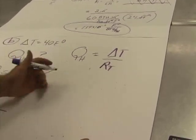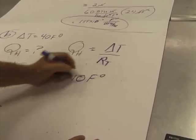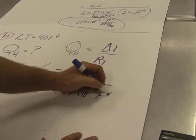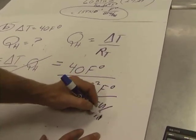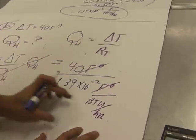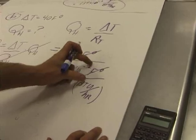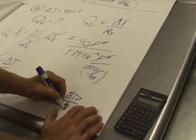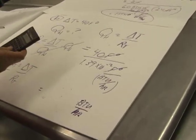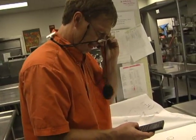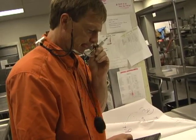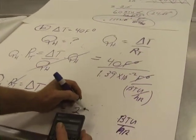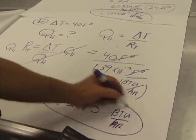I'll have one more time to make sure I get this right when I do the units. So I've got 40 Fahrenheit degrees over 1.39 times 10 to the minus 2 Fahrenheit degrees per BTU per hour. Fahrenheit degrees cancel out. One over one over BTUs per hour, because that's in the denominator of the denominator. Well the answer is going to be in BTUs per hour, so that part's right.